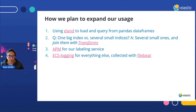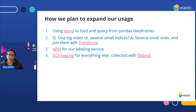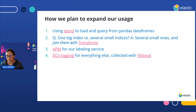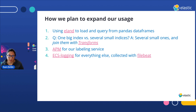Eland is pretty powerful. We recently decided that rather than doing one big index, we're going to do several small indices, which will be much easier to manage for updates and versioning. We'll then be able to combine those indices using the transform feature. We're in the process of integrating APM into our new labeling service, which will make it much easier for us to track how well that's working as a REST API. And we're going to move everything into ECS logging and collect those logs with Filebeat, since we plan to have all of our models living on Kubernetes.